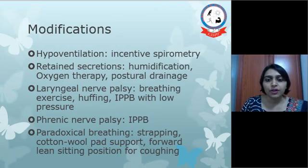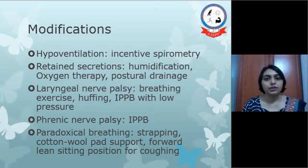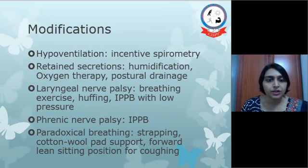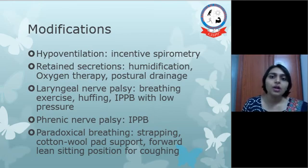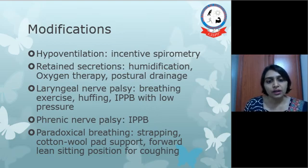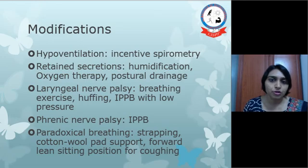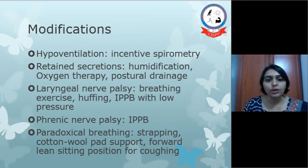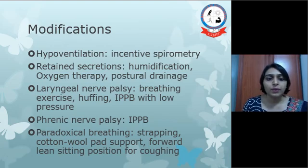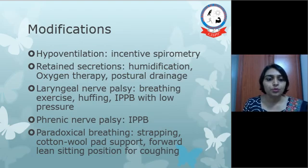Some modifications are required if complications develop. If the patient is having hypoventilation in any area, we can give incentive spirometry or segmental breathing exercises to that area. For retained secretions, we can give humidification, oxygen therapy, and postural drainage. For laryngeal nerve palsy, which is one of the unavoidable complications of pneumonectomy, we can give breathing exercises, huffing, and IPPB — intermittent positive pressure breathing with low pressure — which may improve vocal cord movement and help achieve effective coughing.